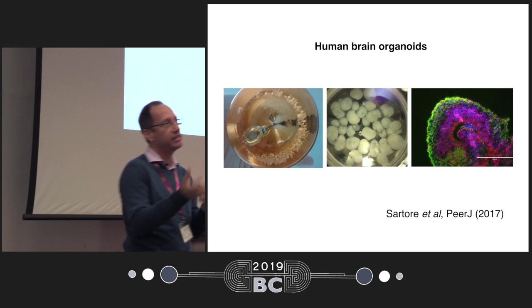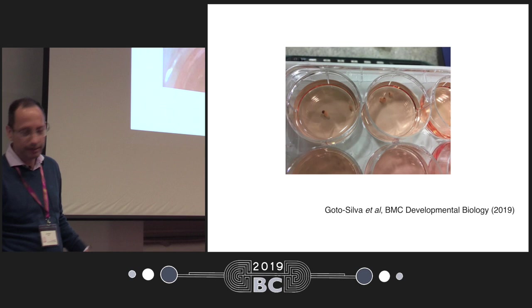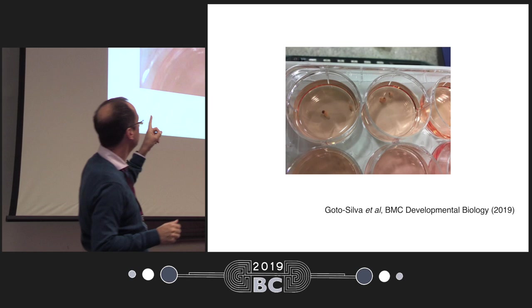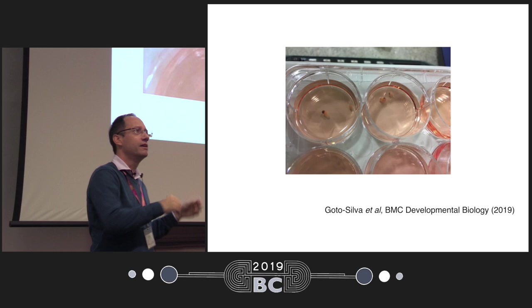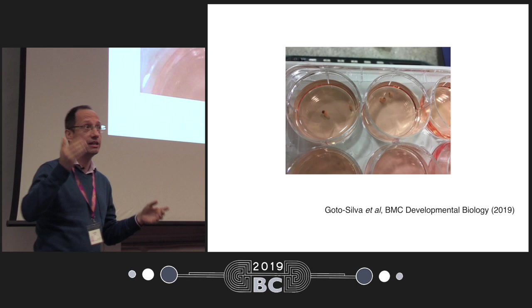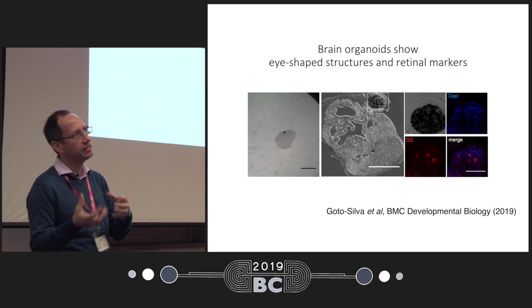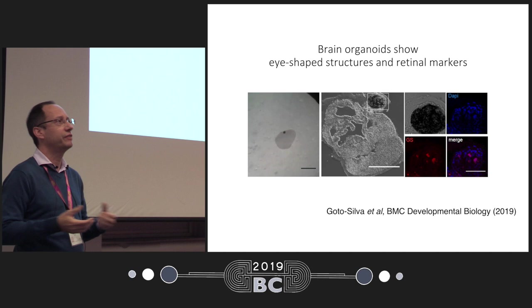We also improved this technique with the collaboration of some mathematicians in Rio de Janeiro and started to play a little more with how we grow those cells. There are three examples of brain organoids with dark spots — we were curious what those dark spots would be. I decided to cut them open, and we realized they were like ice — cavities inside the organoids. This gives us an idea about the complexity of this kind of tissue and how interesting it can be for understanding brain development and the effect of different compounds. This paper was published earlier this year.